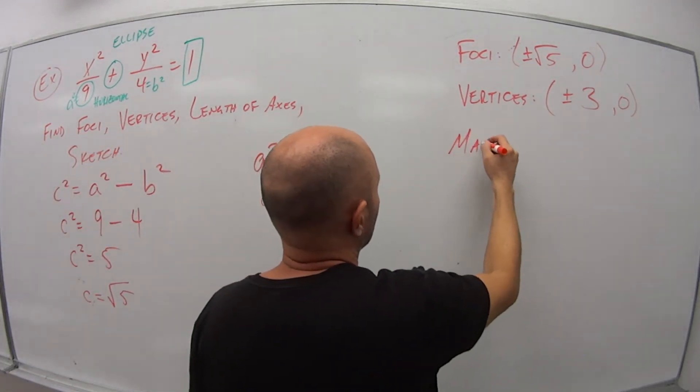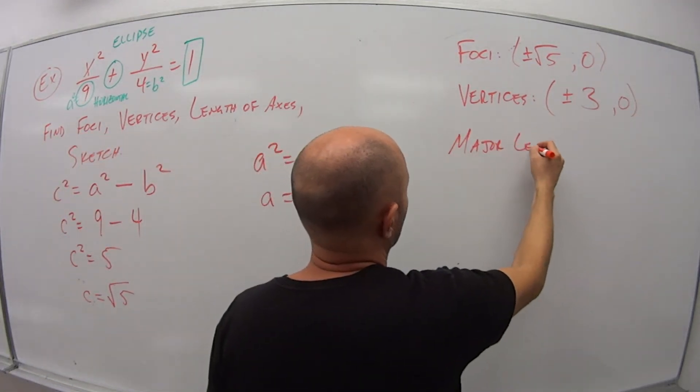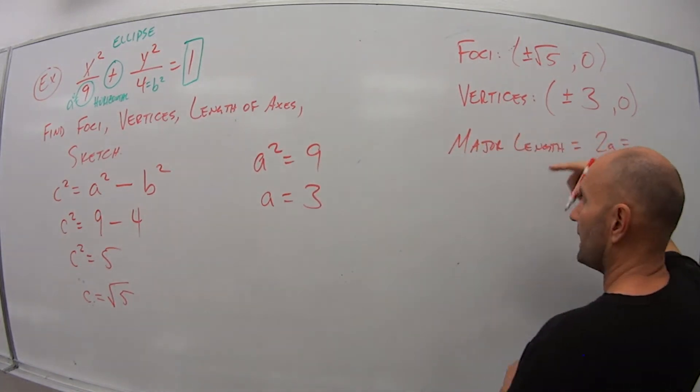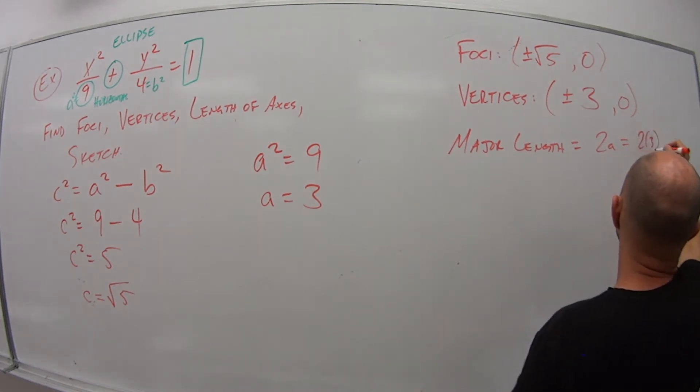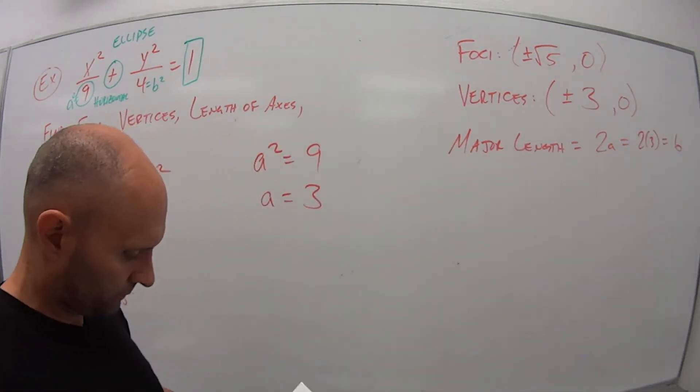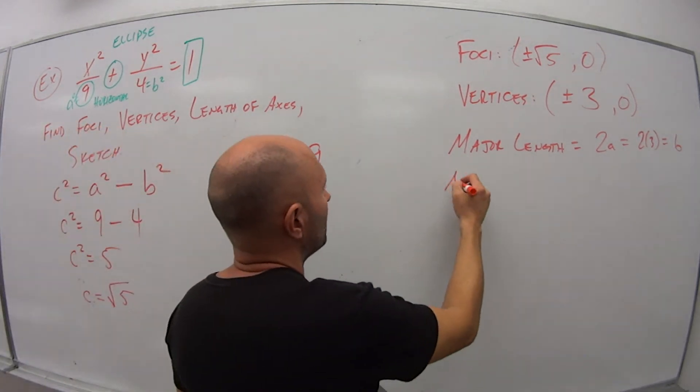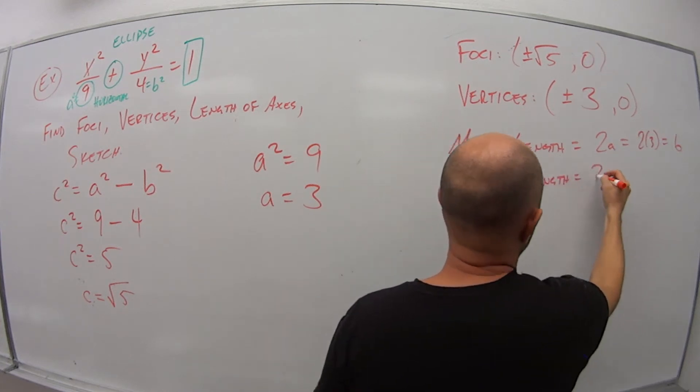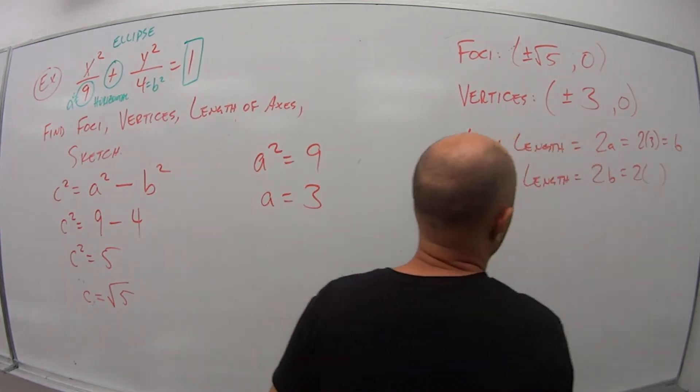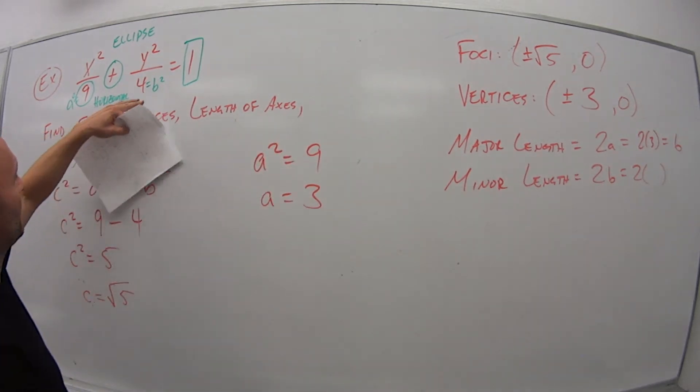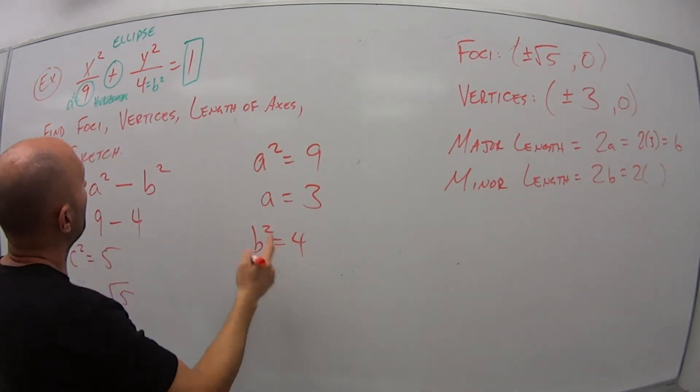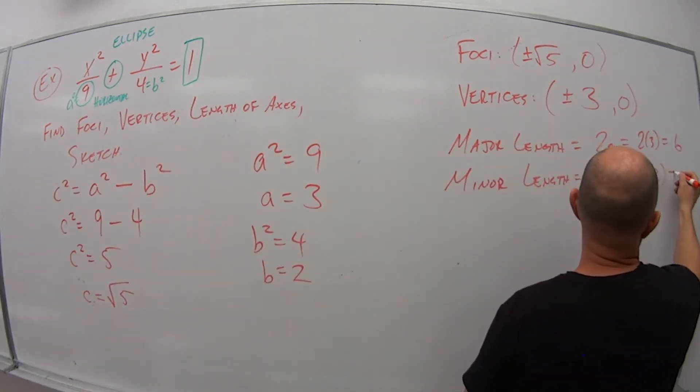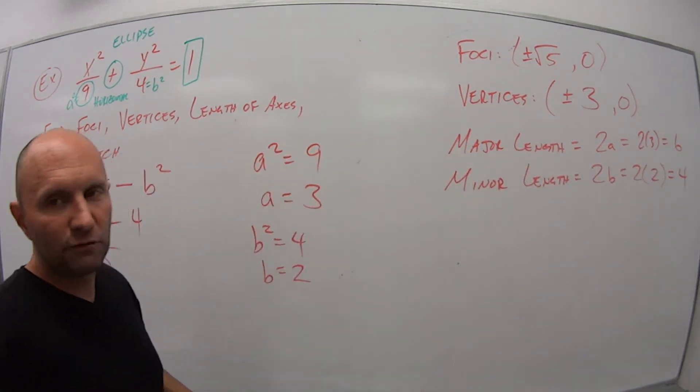So the major length is equal to 2 times a. My a is 3, so 2 times 3, which is 6. And my minor length is 2 times b. So 2 times, well, we haven't figured out b yet. We have b squared is equal to 4, so that means b is equal to 2. So the minor length is 4 units.